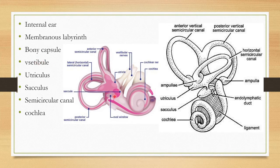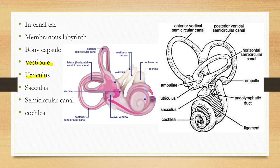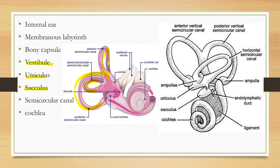The internal ear consists of a vestibule — the utriculus and saccule together constitute the vestibule — and there are three semicircular canals. These semicircular canals, along with the cochlea, constitute the internal ear. Both lateral and anterior semicircular canals are present.